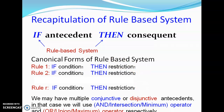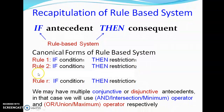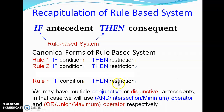In the canonical form of a rule-based system, there can be R number of rules. Rule one states: if condition one is satisfied, then restriction one follows. Rule two states: if condition two is satisfied, then restriction two follows. Likewise, rule R states: if condition R is satisfied, then restriction R follows. In this manner, we have R antecedents and R consequents.